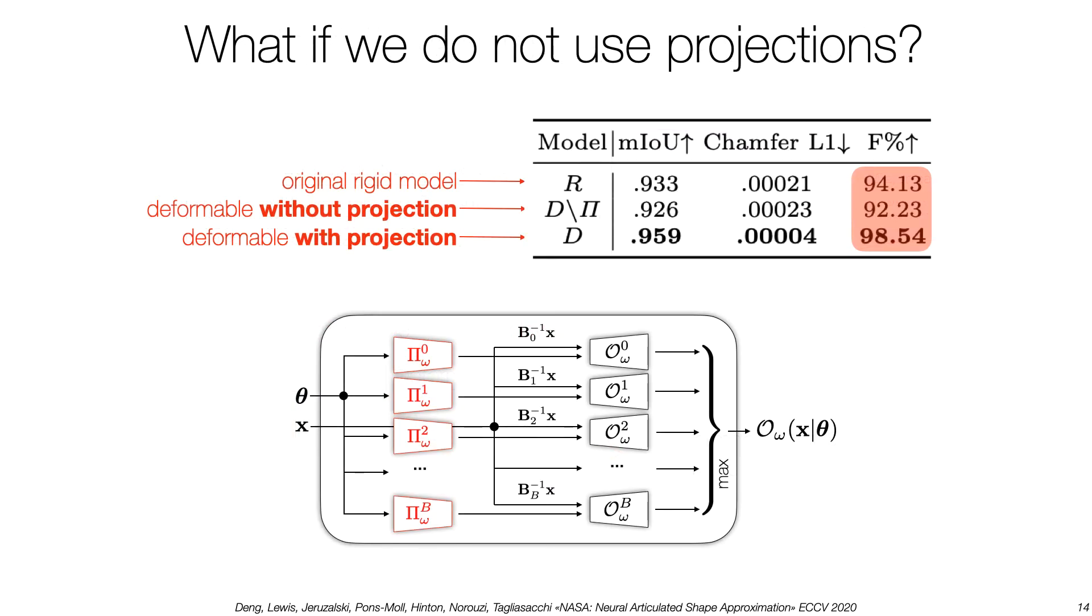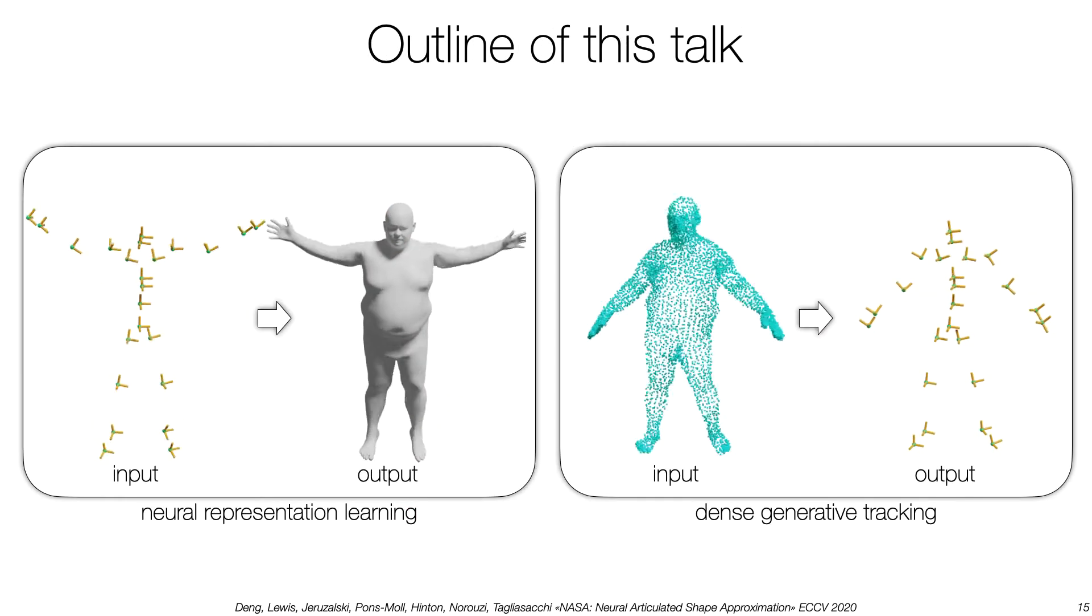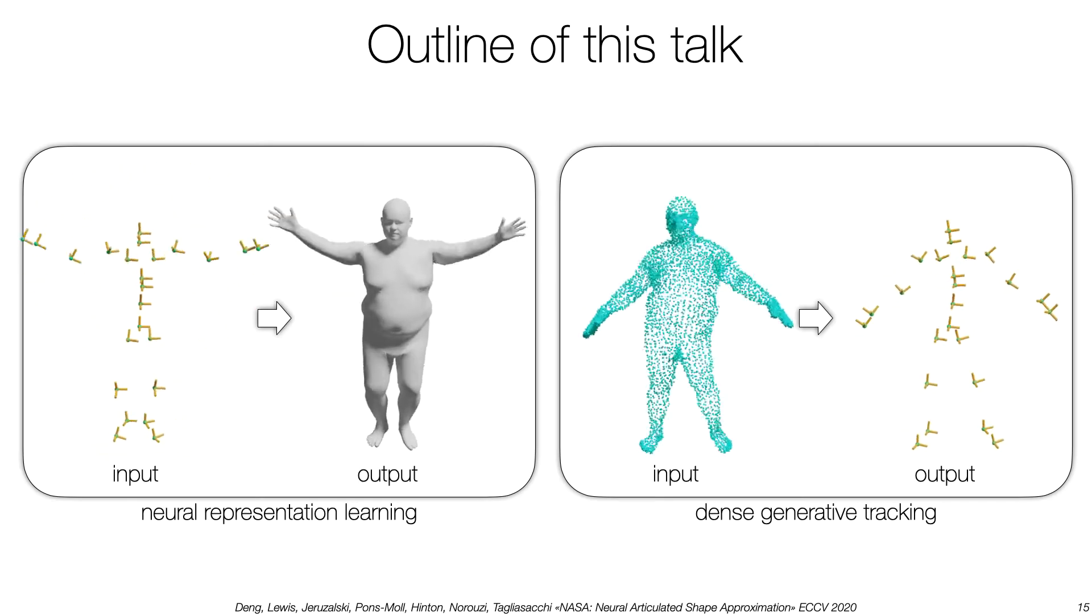One might ask why the linear projections are needed in our model. If we implement a deformable model without projections, the performance is 2% worse than in the simpler rigid model, while with projections enabled, we gain 4%. We now show how to employ these representations in a classical 3D computer vision task.